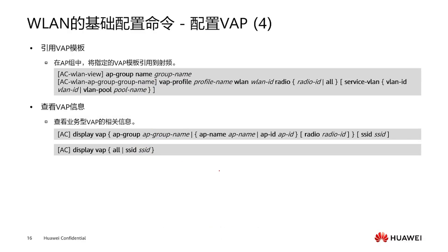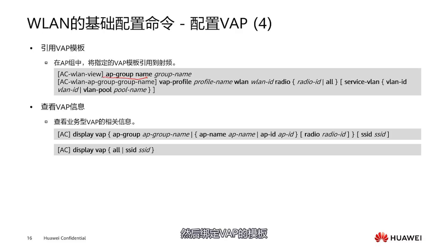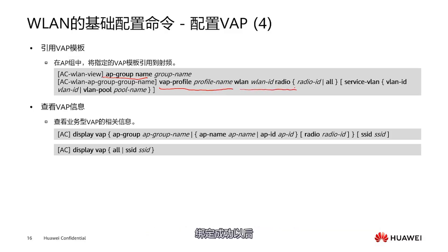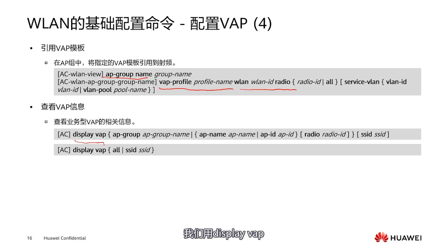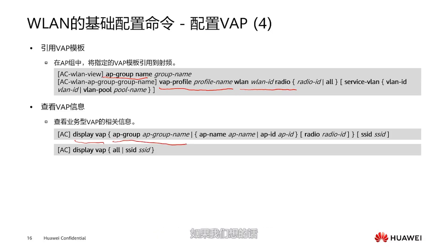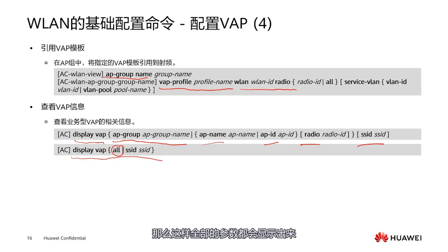Now the VAP template has been created. We need to bind the VAP template with the AP group. First, enter the AP group, then bind the VAP template. The radio frequency also needs to be bound. After binding is successful, we can check the VAP information using 'display VAP' followed by AP group, or use 'display VAP all' to display all parameters.